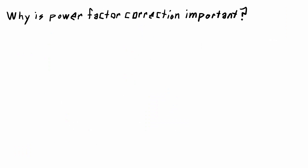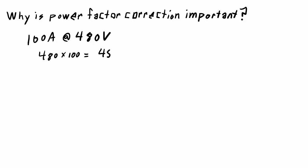So if your displacement power factor is less than 1, what do you do to the system? What kind of components can you add to improve the power factor and push it closer to 1? Let's take a look at why power factor correction is important. Consider a system that's rated to carry 100 amps at 480 volts — rated at 480 times 100, or 48,000 VA. The rating is always going to be the RMS voltage times the RMS current, so in this case it's 48 kVA.